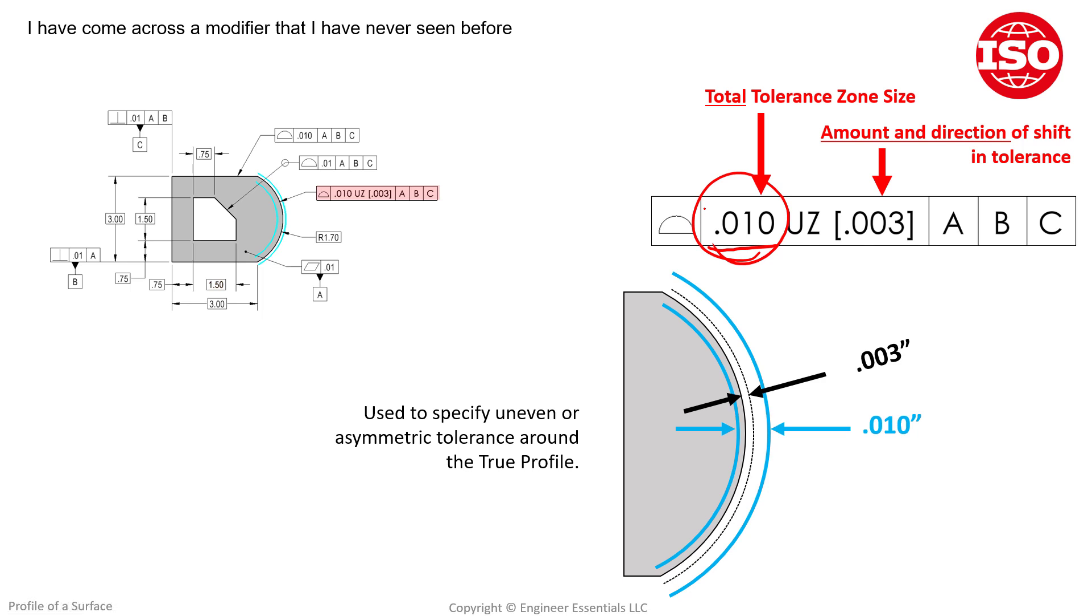So flat planar surfaces, our tolerance zone is going to be parallel planes. When we're controlling the radial surface here, our tolerance zone is radial in nature as well, right? So it's the same total zone.